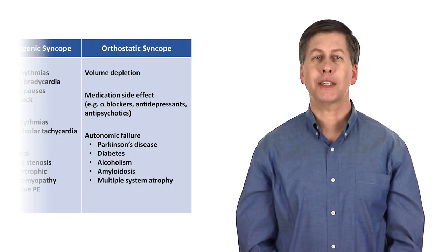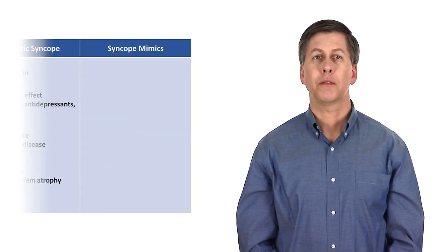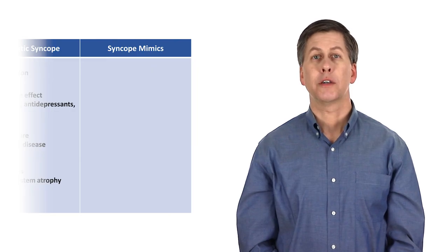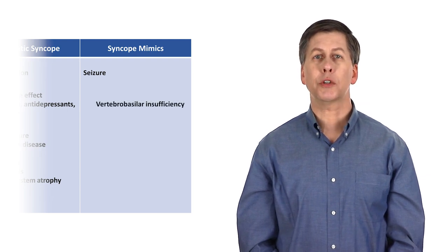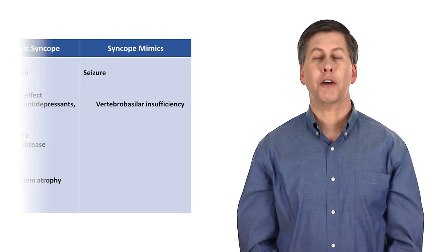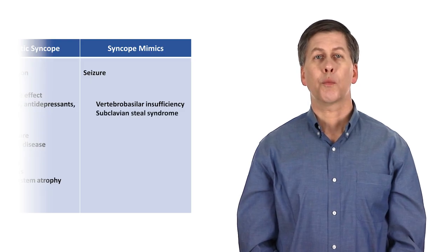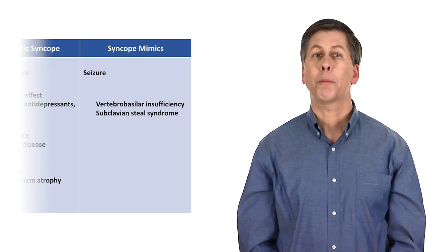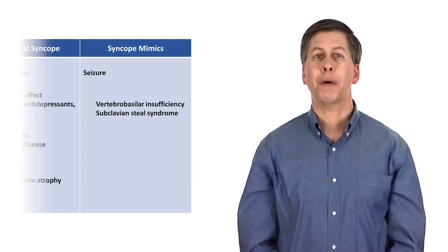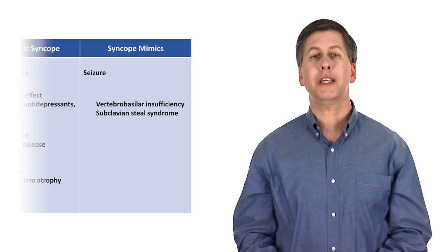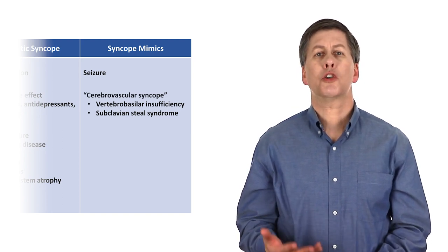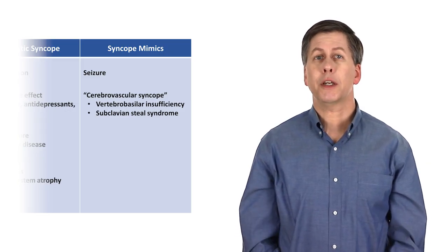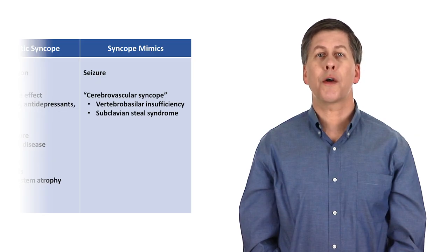In addition to our three main mechanistic categories, there is one final category for syncope mimics. These are conditions which can look like syncope, but are not. The most notable one here is seizure, which I'll discuss more in a minute. Vertebral basilar insufficiency occurs when atherosclerosis of the vertebral basilar arterial system causes transient ischemia of the brain stem. Subclavian steel syndrome occurs when atherosclerosis or a clot in one of the subclavian arteries proximal to the takeoff of a vertebral artery leads to the reversal of flow in that vertebral artery, which then shunts blood away from the basilar artery. Together, vertebral basilar insufficiency and subclavian steel syndrome are sometimes referred to as cerebrovascular syncope. Its semantics as to whether these represent true syncope or are syncope mimics, but they are both rare and should only be considered once other diagnoses have been ruled out.